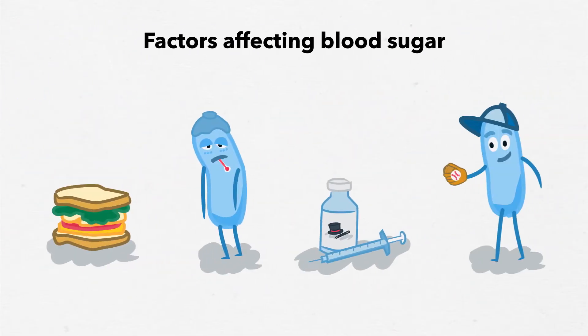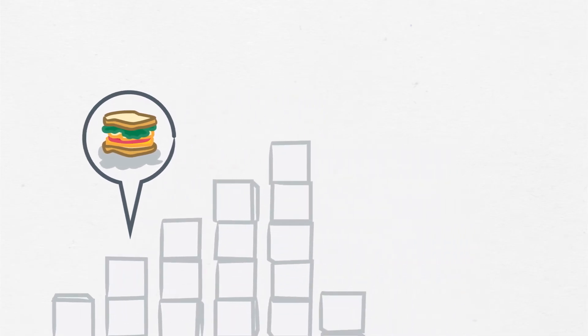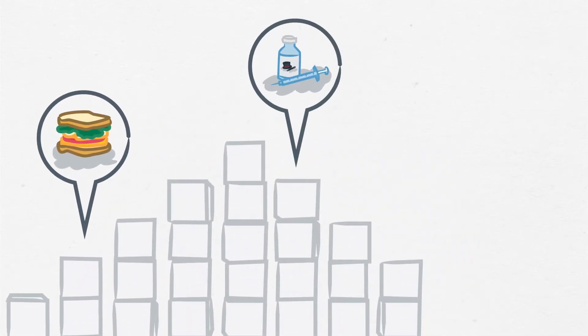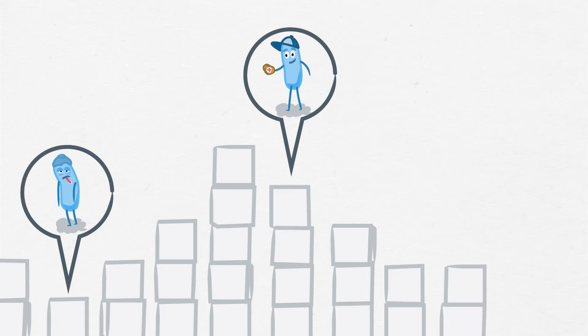Remember these four things about blood sugar. The carbohydrates in food raise blood sugar. Insulin lowers blood sugar. Stress, illness, or excitement can raise blood sugar. Physical activity usually lowers blood sugar.